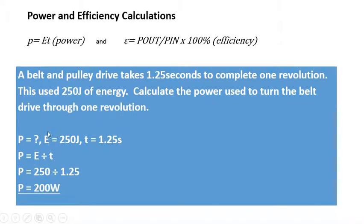Now we've done this before. Power is energy divided by time. So 250 joules divided by 1.25 seconds gives us 200 watts.